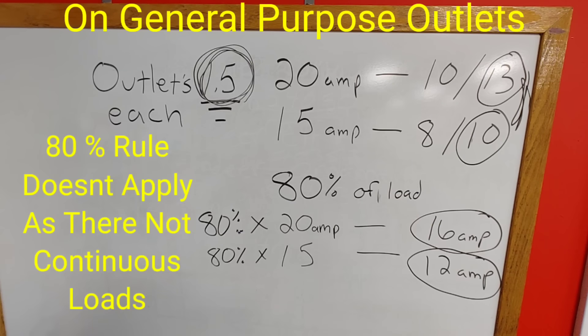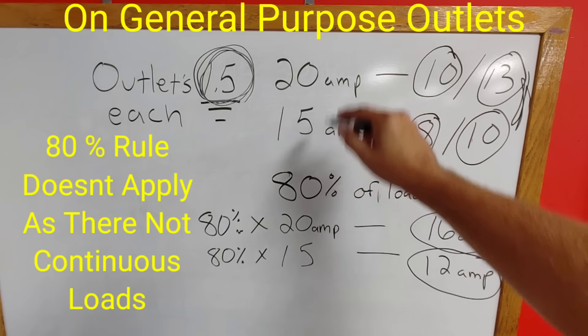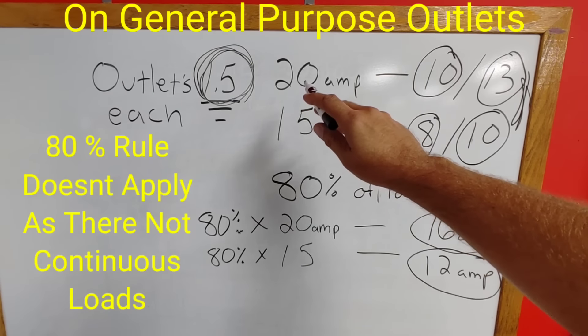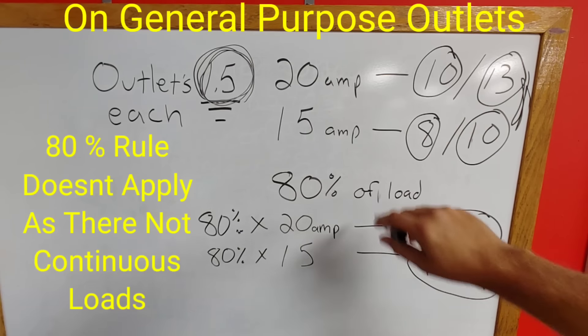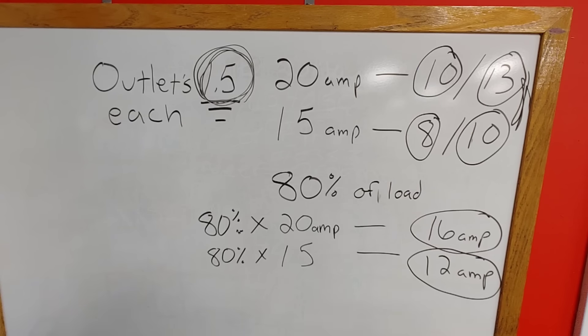And if you use that thought of logic when trying to calculate out how many outlets you can put on a circuit, that's going to take you to 10 outlets or 8 outlets depending on what amperage circuit you're using. So if it's a 20 amp breaker it'll be 10 outlets. If it's a 15 amp breaker it's 8 outlets. But again, technically there really is no wrong answer.